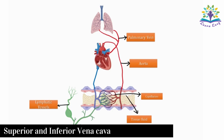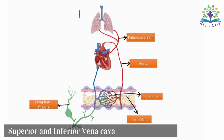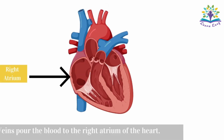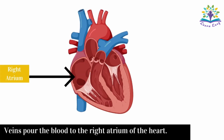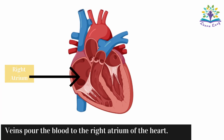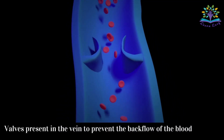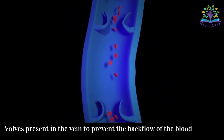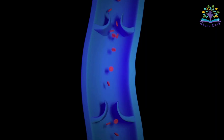The large vein that collects deoxygenated blood from the upper part of the body is the superior vena cava, and the one that collects the blood from the lower part of the body is the inferior vena cava, which pours the blood to the right atrium of the heart. Note that the blood is not flowing through the vein under any pressure, and there are valves present in the vein to prevent the backflow of the blood.